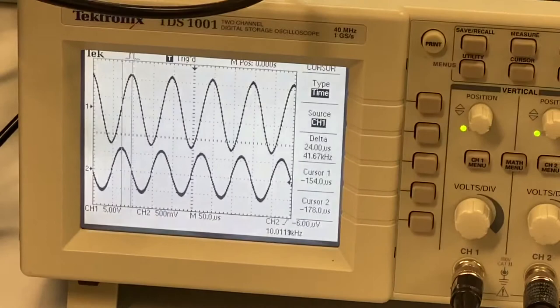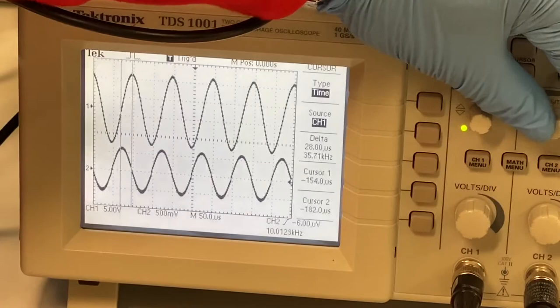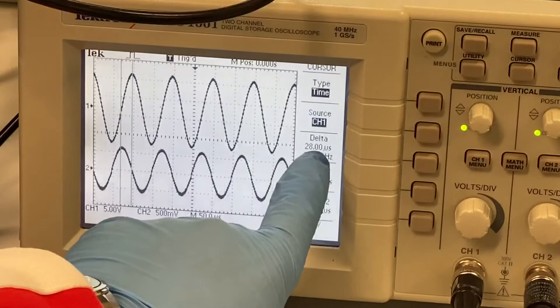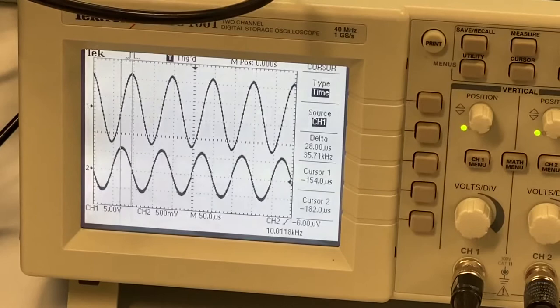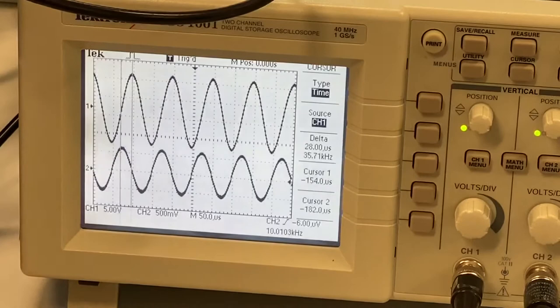Now we have this. We've got now this difference. What we have is a difference between these two in the second division, which is 28 microseconds. You can see that 28 microseconds. Now, that 28 microseconds, we call it delta T.